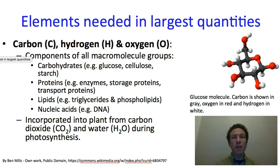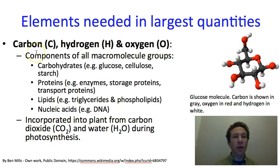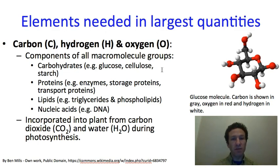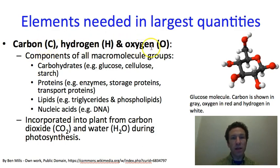Some macronutrients are required in the largest quantities and do not come directly from the soil. These are carbon, hydrogen, and oxygen — C, H, and O. These three are by far the most important because they are the major components of all groups of macromolecules: carbohydrates, proteins, lipids, and nucleic acids. All four categories are made up primarily or exclusively of atoms of these three elements. Without any of these three, the plant would be unable to make sugars and therefore unable to survive.